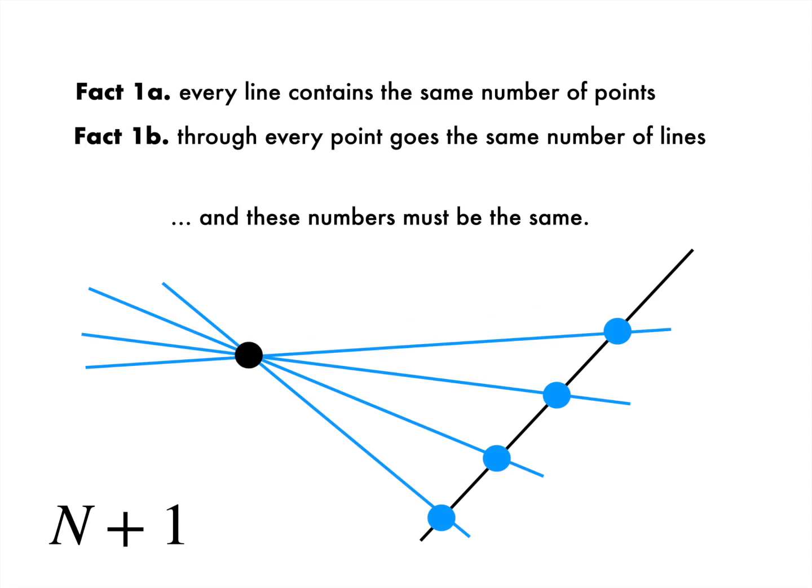But of course, that point wasn't special. Any other point not on my first line would have come to the same conclusion. Therefore, all points not on my first line must have the same number of lines going through them.